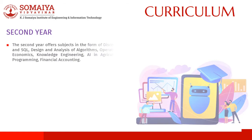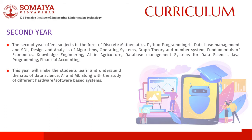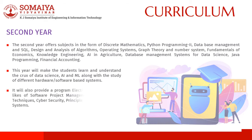Second Year: The second year offers subjects including discrete mathematics, introduction to data science, Python programming 2, database management and SQL, design and analysis of algorithms, operating systems, graph theory and number systems, fundamentals of economics, theory of computation, knowledge engineering, optimization in machine learning, AI in agriculture, database management systems for data science, Java programming, and financial accounting. This year covers the crux of data science, AI, and ML along with hardware and software-based systems, and a program elective from software project management, cryptographic techniques, cyber security, and principles of communication systems.